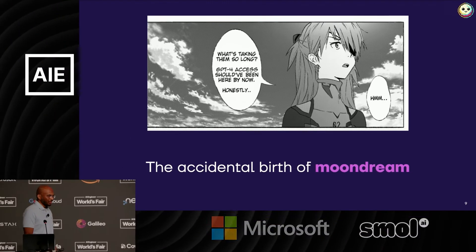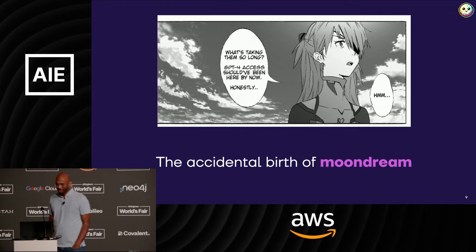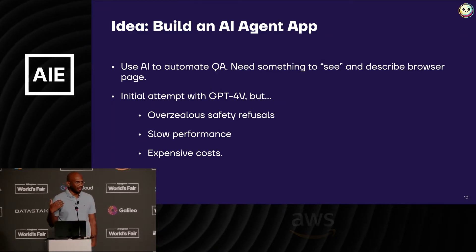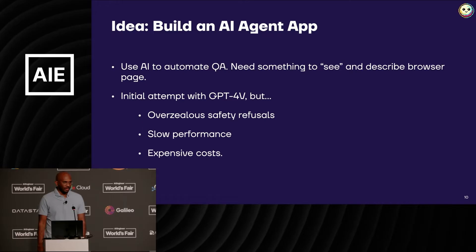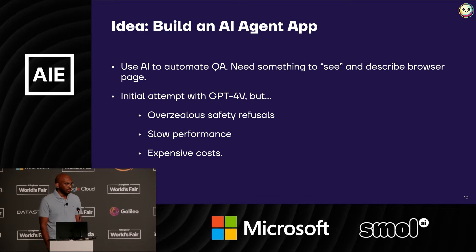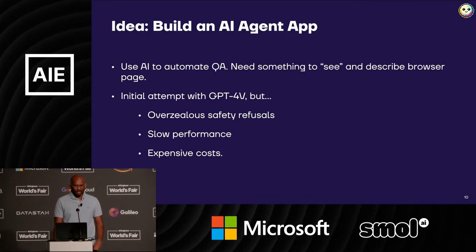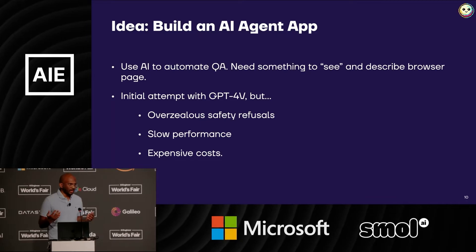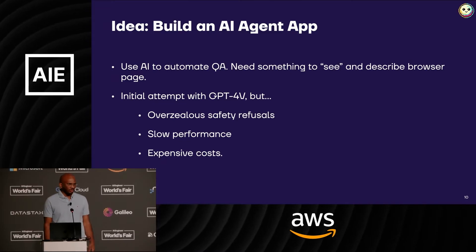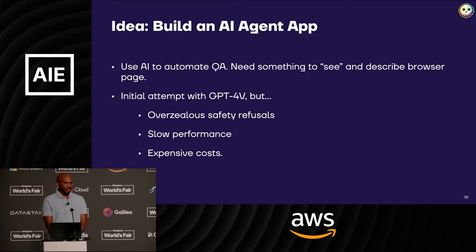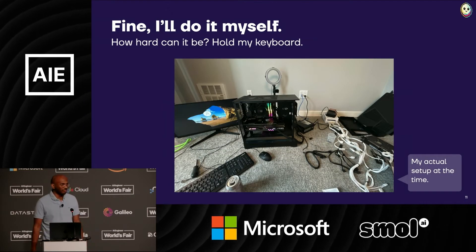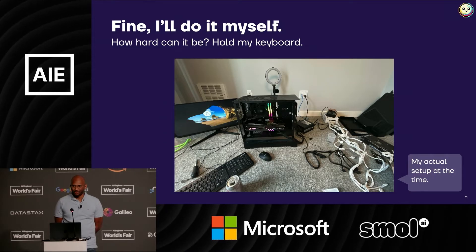I didn't really set out to build a vision model — I kind of got roped into it. I was originally trying to build an application that required an AI agent, so I needed to be able to see what was going on on the user's screen and have it describe what's on the browser page for QA testing automation. I tried to do this at first with GPT-4V, but there were too many safety refusals back then. If there was any human being present in the image, it would just refuse to process it. It was also going to be really slow and expensive, so I realized if this is a product I'm trying to build, I really need to have control over the model itself. So I figured, how hard can it be? Let me just go try and build this model myself.